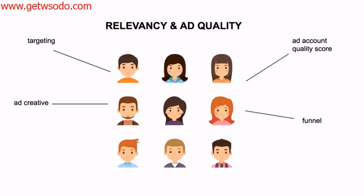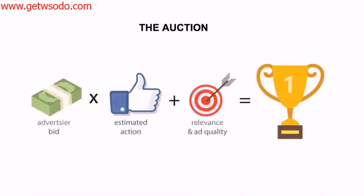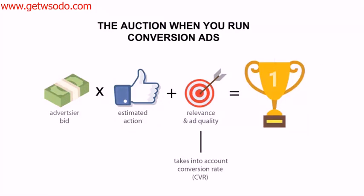That's what goes into relevancy and ad quality. What was just covered applies across lead gen, coaches, online courses, e-commerce, etc. But when you're running conversion-based objective ads — which is what you'll probably be running for e-commerce — there's a slightly different element that also goes into the equation: the CVR, your conversion rate. When you're running a conversion objective ad, Facebook also looks at the conversion rate of that funnel, knowing how many people are converting and whether that's good or bad.